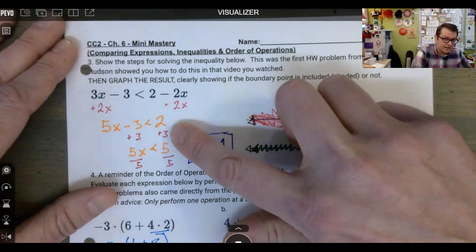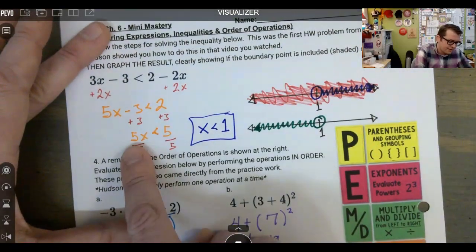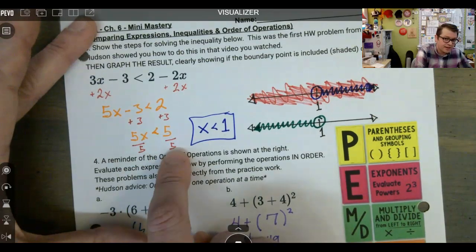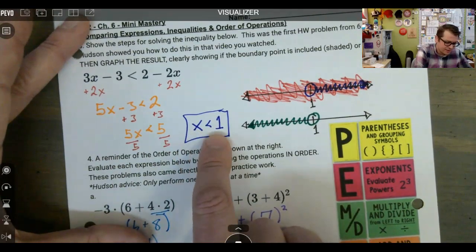If 5X is less than five, I could divide both sides by five and see that X must be less than one.